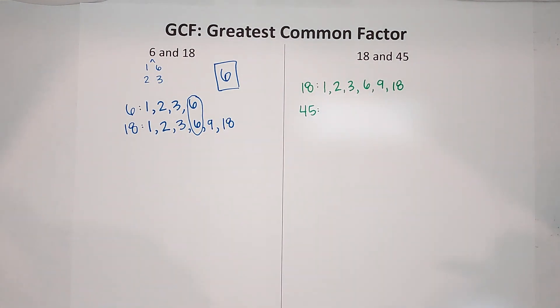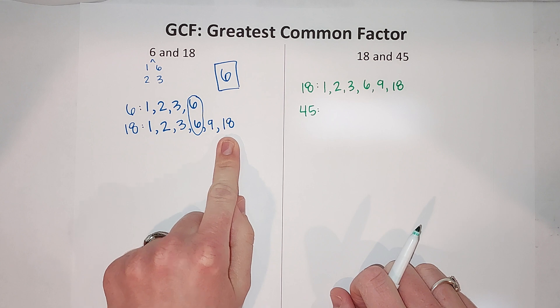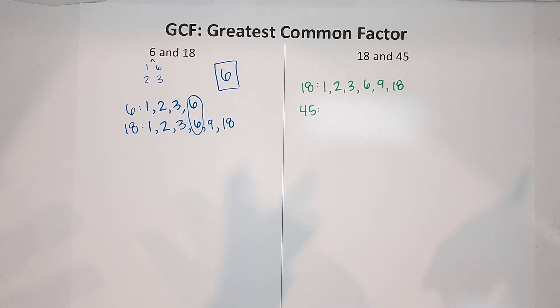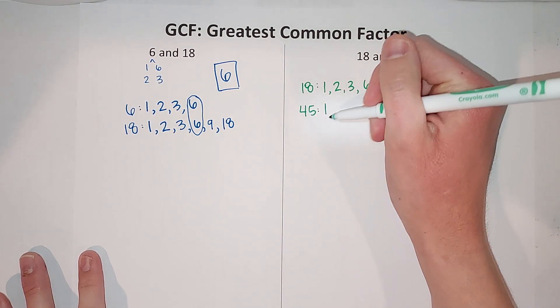Now the factors of 45. To figure these out you can write them like this if that's easier for you and then list them out this way, or I just kind of like to start with 1 and work my way up. So I know 1 times 45 is 45.